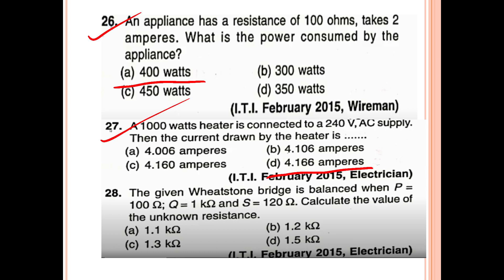28th question: A Wheatstone bridge is balanced when P equals 100 ohm, Q equals 1 kilo ohm, and S equals 120 ohm. Calculate the value of the unknown resistance. Using P by Q equals S by unknown resistance, the answer is 1.2 kilo ohm.